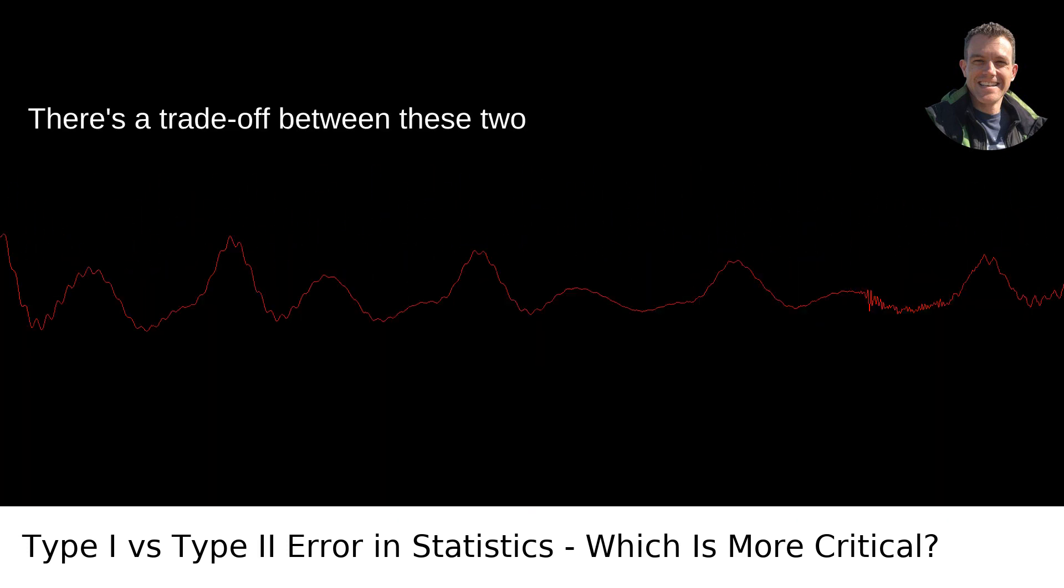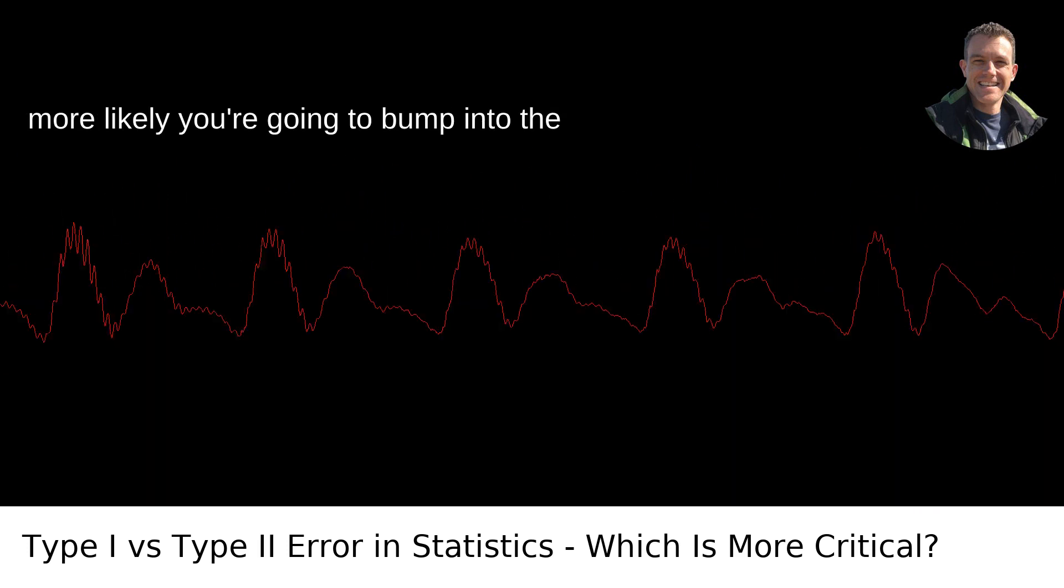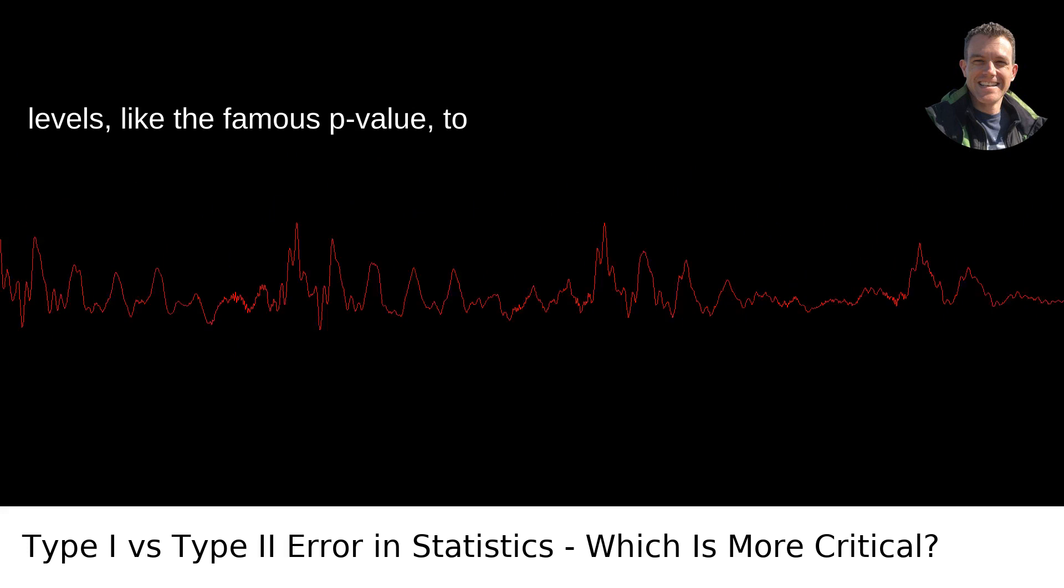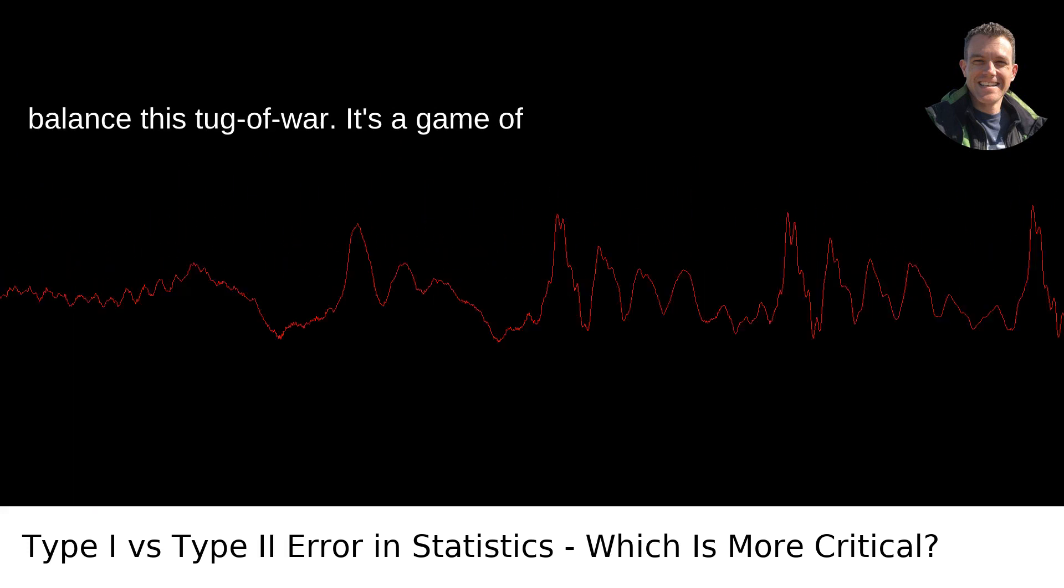There's a trade-off between these two errors. The more you try to avoid one, the more likely you're going to bump into the other. Statisticians use significance levels, like the famous p-value, to balance this tug-of-war.